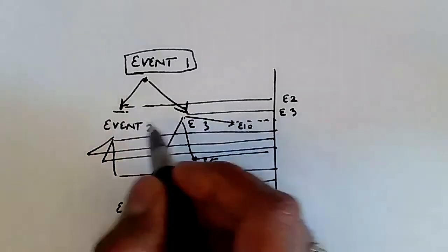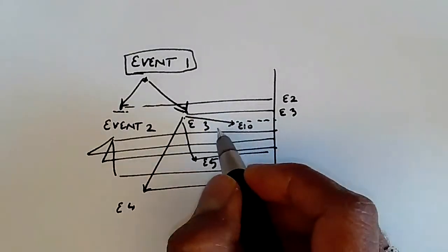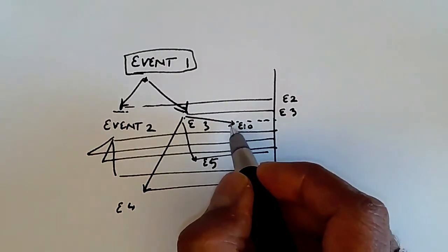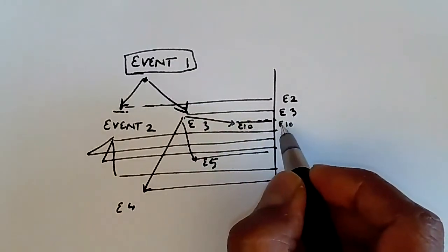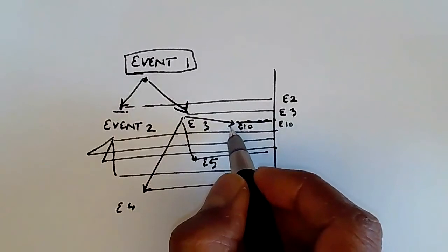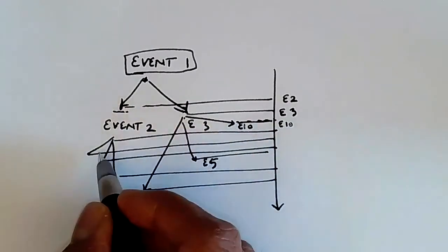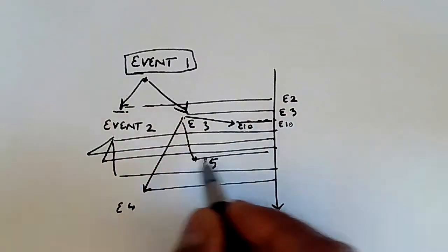So even though E two comes before E three, if E three creates an event that happens very soon in time, E ten, then E ten must go first. Because again, E ten may cause some side effects which can impact these other events that are drawn over here.